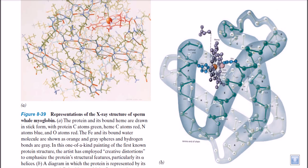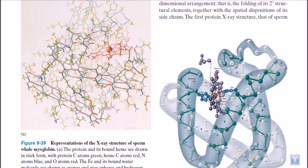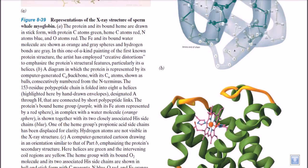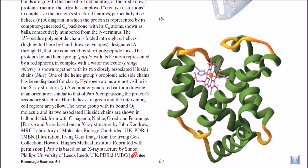Looking at the structure of sperm whale myoglobin, we can see a globular structure with different regions of domains. In this structure we have alpha helices and turns — notably no beta sheets are involved in making this kind of structure. The arrangement of these alpha helices is really important to make a properly functional protein. If amino acid sequences are arranged into alpha helices, beta sheets, and turns, they interact together to make a protein, but that is only half the job done.